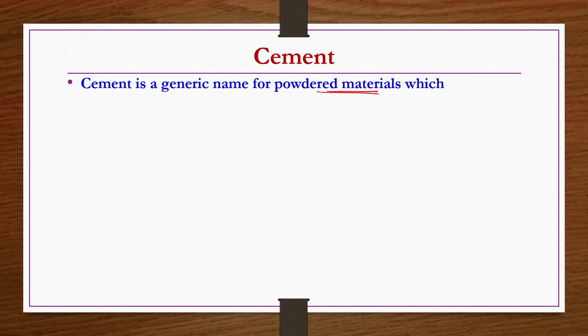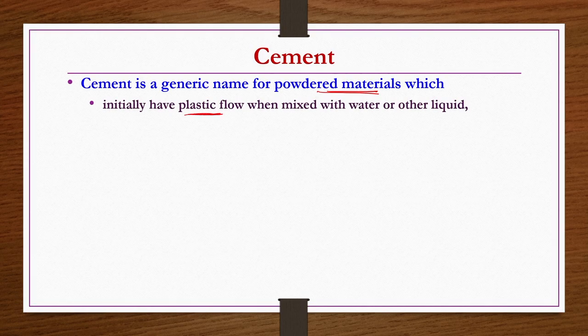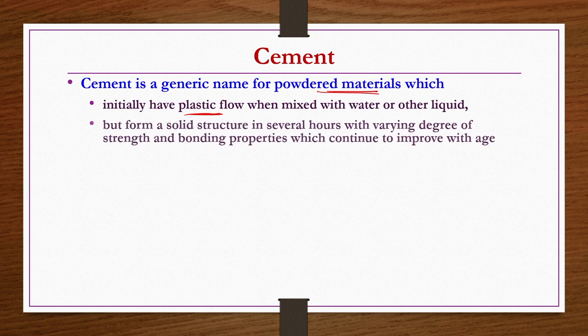Cement is a generic name for powdered materials. When you mix this powder with water or liquids, it initially has plastic flow — meaning it will not get back to its original shape even after removing the water by hydration. You cannot get back to the initial conditions. Further, it forms a solid structure in several hours with varying degrees of strength and bonding properties, and the strength and bonding properties improve continuously with age.